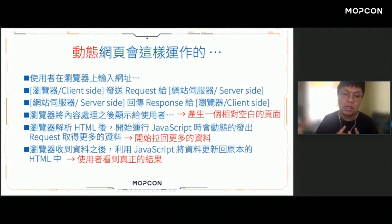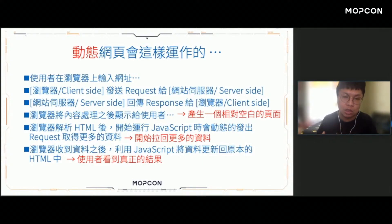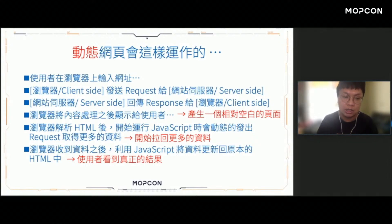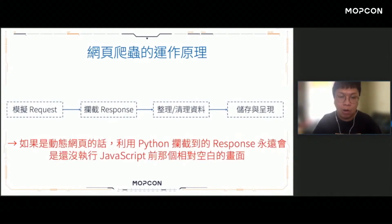動態網頁的運作方式是這樣的：一般的靜態網頁是發出請求取得回應，這個回應就是我們最後看到的頁面。可是動態網頁在第一次取得內容的時候，只會產生一個相對比較空白的頁面，或者就是轉轉轉的載入中畫面。當瀏覽器解析HTML開始運行JavaScript之後，它會透過JavaScript動態地發出更多的請求去取得更多的資料，這個時候才會慢慢拉回資料，瀏覽器再把資料更新回畫面當中。